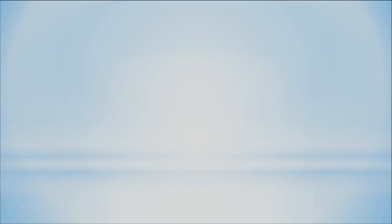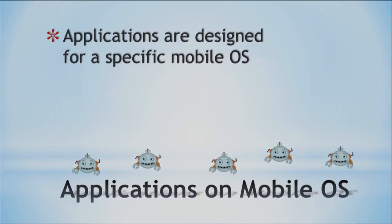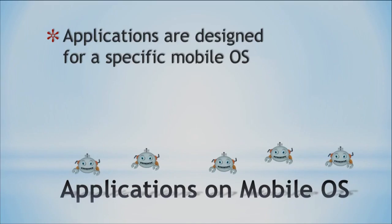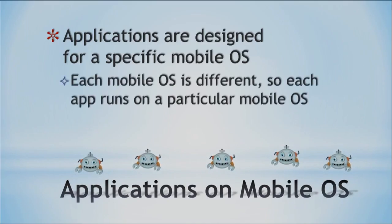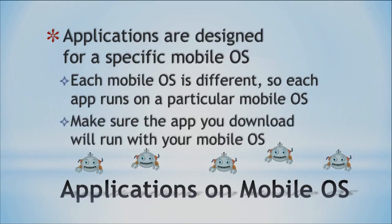Something to be careful about: you have all these different applications you can download, but each one is designed for a certain mobile operating system. Every mobile operating system is different — it runs with different languages or different hardware. So apps are made just for a particular mobile operating system; it's too bad it's not more universal or flexible. When you download an app, make sure it runs on your particular mobile operating system. Just double check that it works on your particular phone, iPad, or whatever mobile device you have.